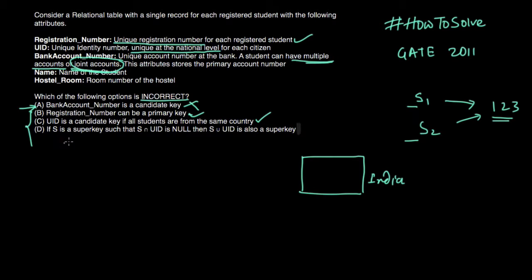Now let's see the last option which is s is a super key such that s intersection UID is null. S is a set of few attributes, intersection with UID is equal to null. What does it mean? It means that this set of attributes which is forming our super key does not have UID. So as it doesn't have UID intersection with UID is equal to null. Now then s union UID. So if with this set I am also including UID then it will again be a key or super key.